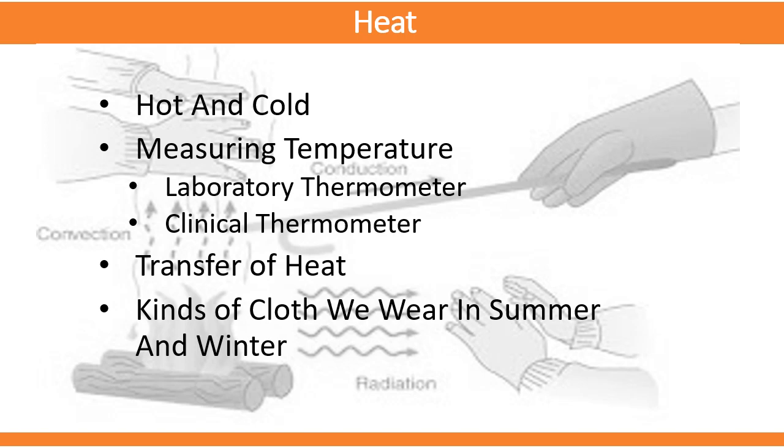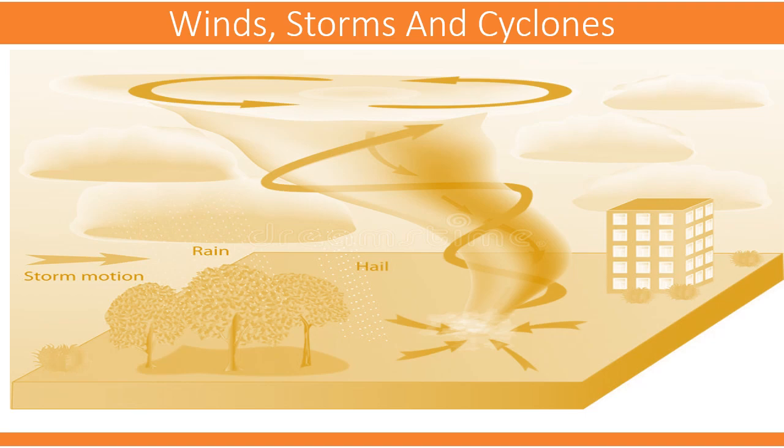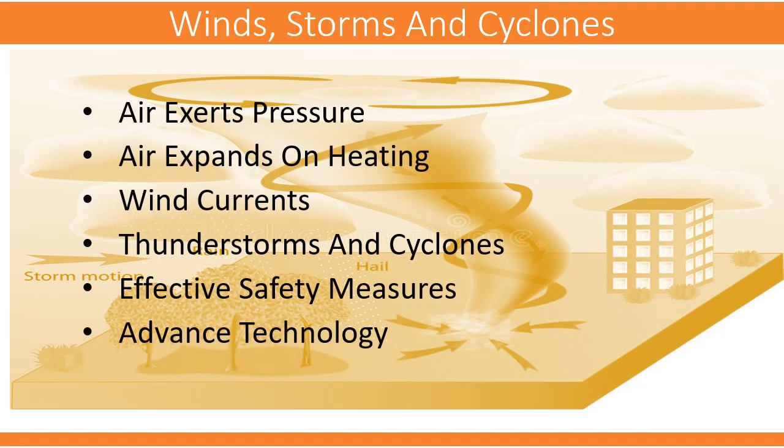The next chapter is Winds, Storms and Cyclones. Under this, we will study about air. We will see that air exerts pressure and air expands on heating. We will discuss wind currents, thunderstorms and cyclones. We will learn about the effective safety measures during thunderstorms and cyclones, and the advanced technology we use during these events.